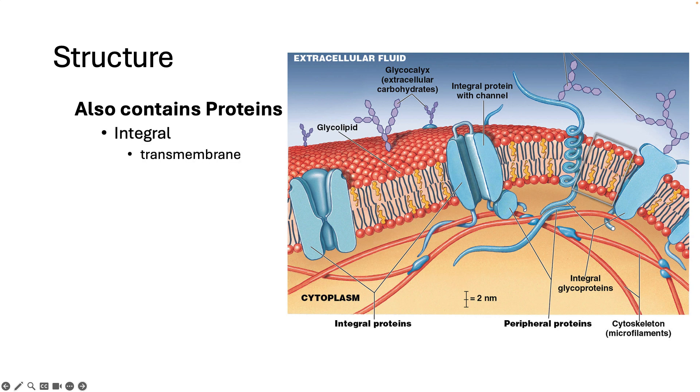Some proteins span the entire membrane going from one side to the other. And these are sometimes called transmembrane proteins. They can form channels or tunnels through the membrane, like these two proteins are doing. They provide safe passage through the membrane for things that don't like that hydrophobic core.